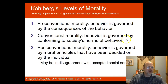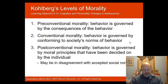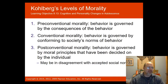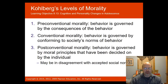Conventional morality is where behavior is governed by conforming to society's norms. For example, when the instructor's son was in fifth grade and was told to bike to school, he refused because the handbook said not to bring bikes — he was at the law-and-order stage. Post-conventional morality is where behavior is governed by moral principles decided by the individual, which may be in disagreement with accepted social norms — the instructor believed the rule was dumb and broke it, while his son remained firmly at stage two.